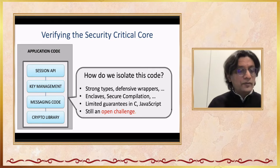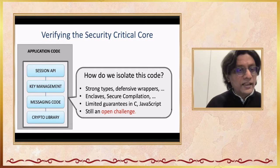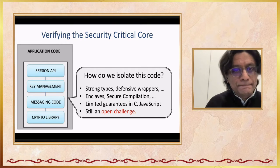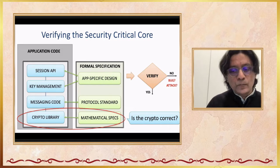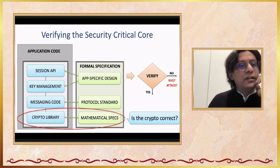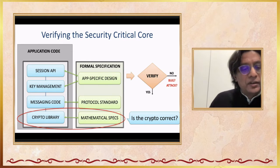We don't have very good answers for how to ensure the rest of the application doesn't mess up the verified security core. This is still an open challenge. There are some answers — type-based abstractions, defensive programming, or architectural solutions like using an enclave. But considering that most deployed code is in languages like C, Rust, and assembly, you really don't get any strong isolation guarantees.